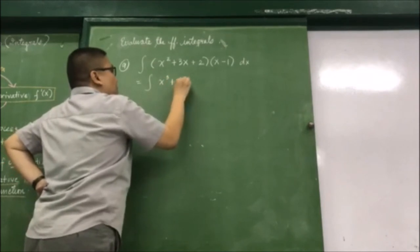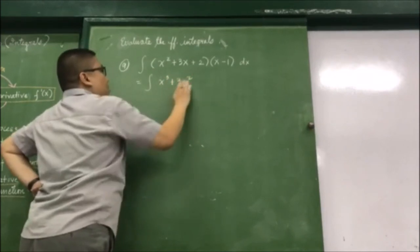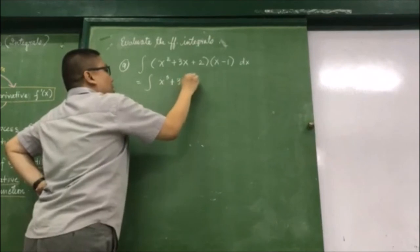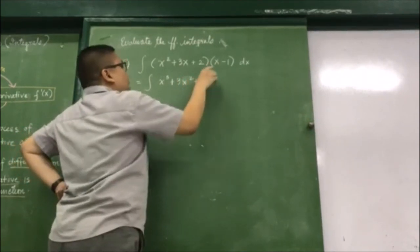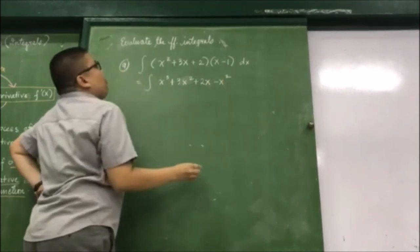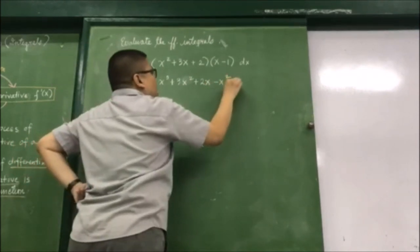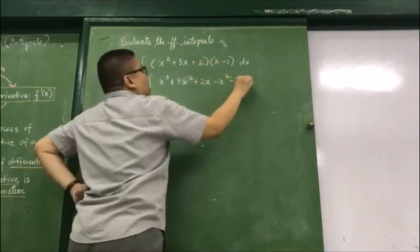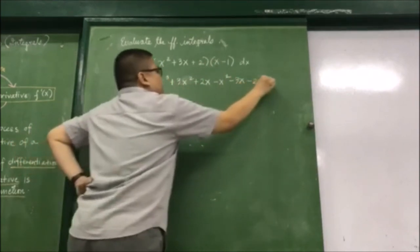Plus 3x squared, plus 2x. Then here we have minus x squared, then we have minus 3x, then we have minus 2 dx.